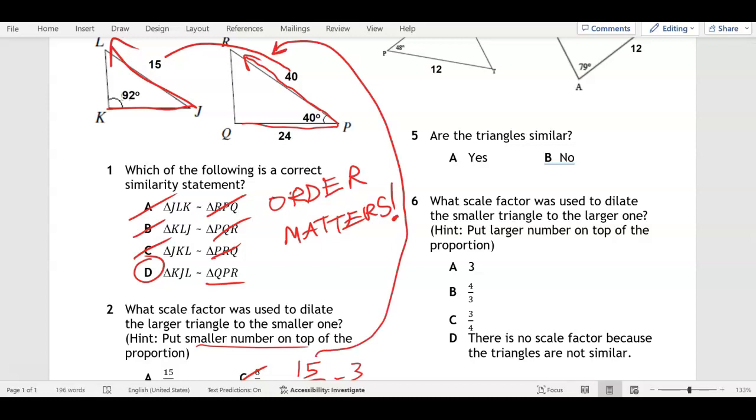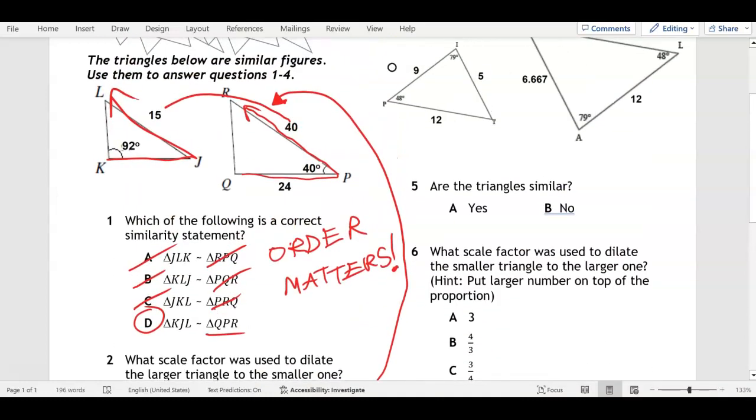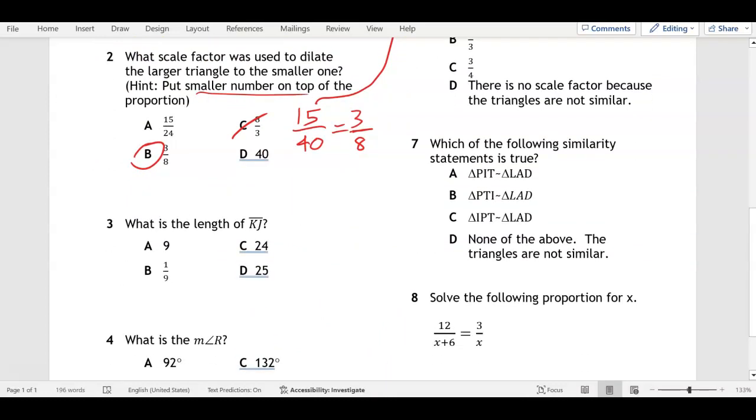Number three: what's the length of KJ? Well, we put an X here and we can make this connection. So KJ is missing, it's X, and we have 15 to 40, X to 24. We can make those two fractions: 15 to 40, X to 24.